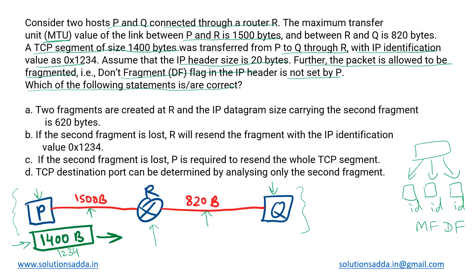Let's understand how this transmission works. From P to Q there are two different links — call them link A and link B — both having different MTUs. One approach is to find the bottleneck bandwidth, which is 820 bytes, and send segments of that size directly. This is done via ICMP-based path MTU discovery, but since it is not mentioned here, we will not consider this approach.